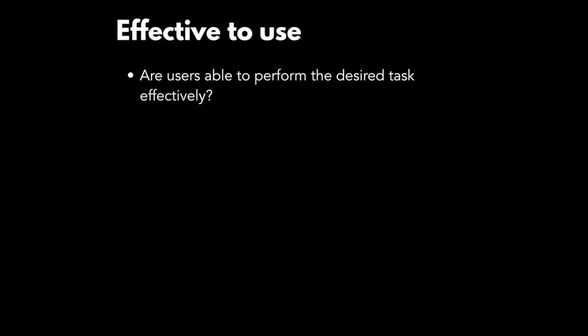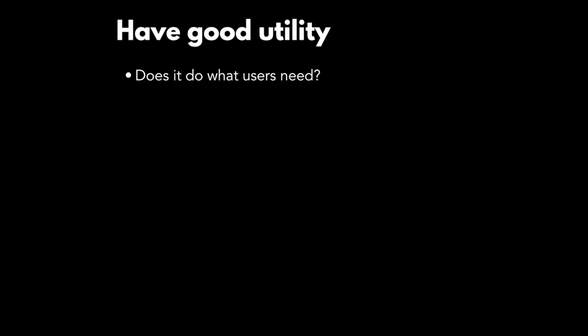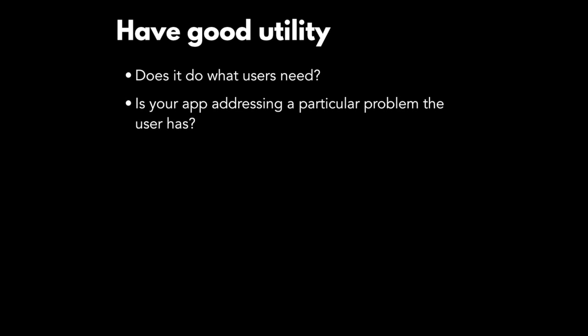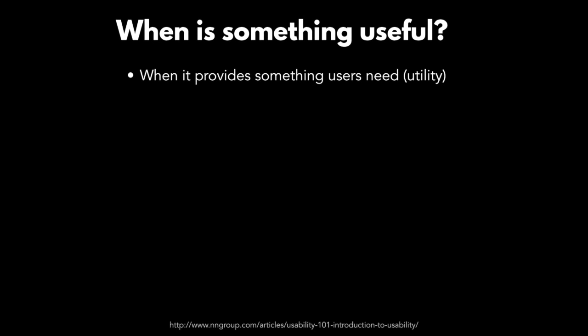Your app should be effective to use — primarily concerned with how well the work is done. When efficiency is concerned with how quickly a task can be completed, effectiveness considers how completely and accurately the user goals are reached. And probably one of the most important usability goals is that your application should have good utility — does it do what the users need it to do? Is your app addressing a particular problem the user has?